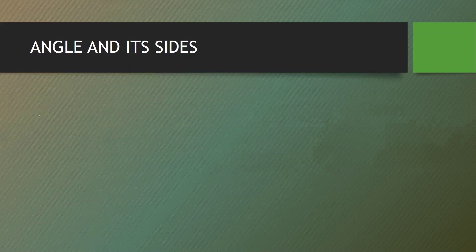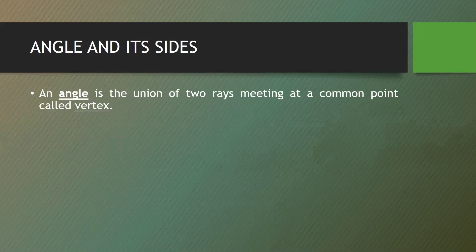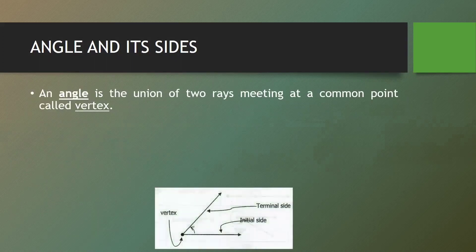Let's now define some terms in trigonometry. First, the angle and its size. An angle is the union of two rays meeting at a common point called the vertex. These are the two rays that are united, and a ray is a part of a line that has a fixed starting point but no end point. So these two rays make up a common point called the vertex.